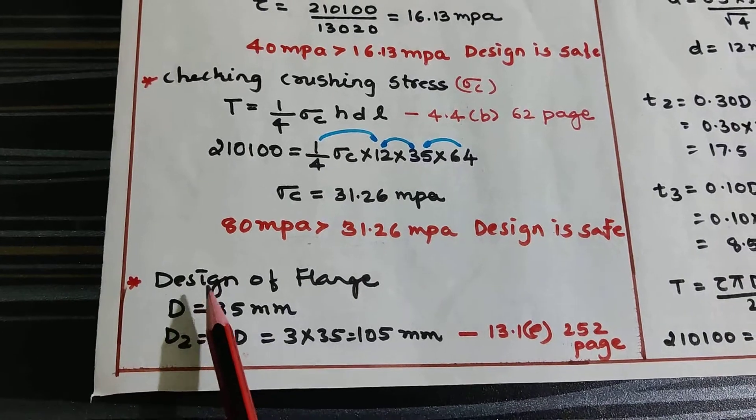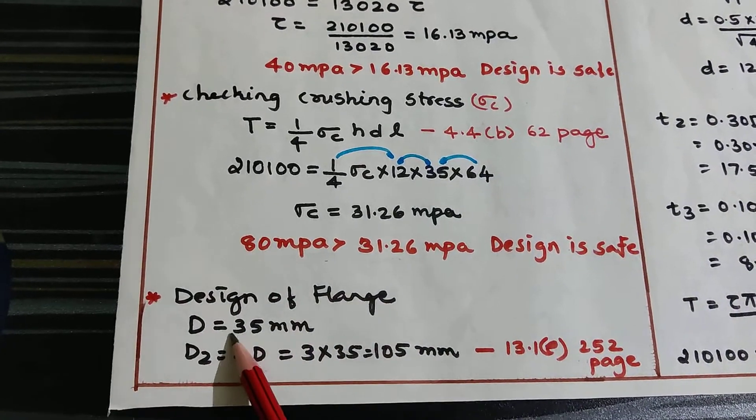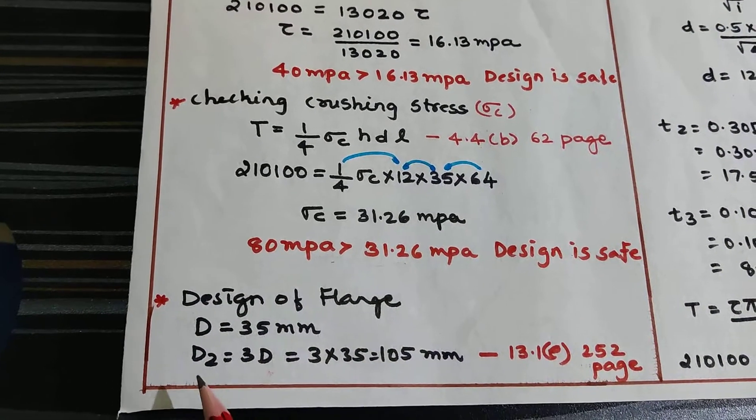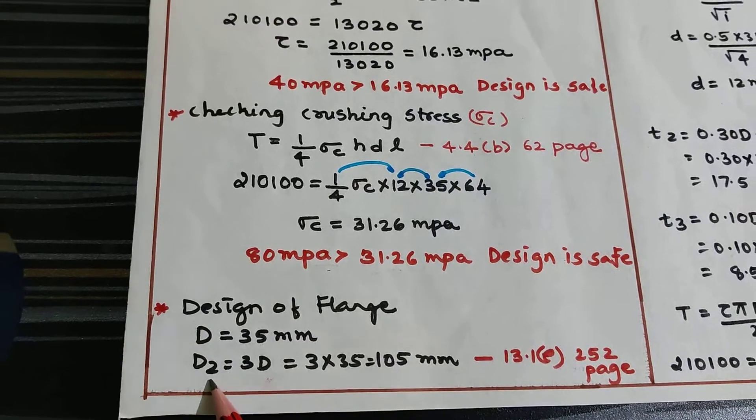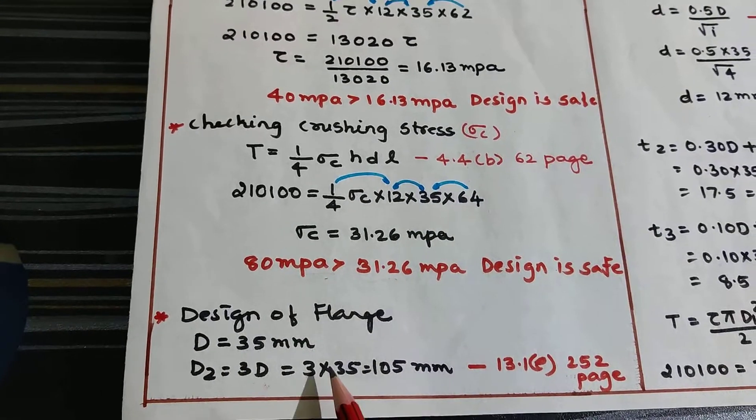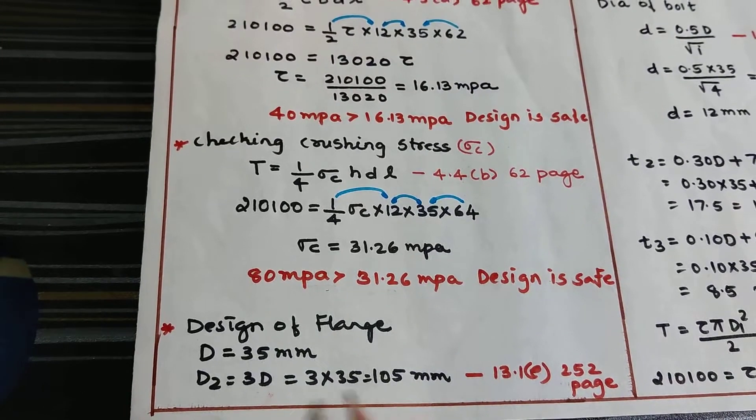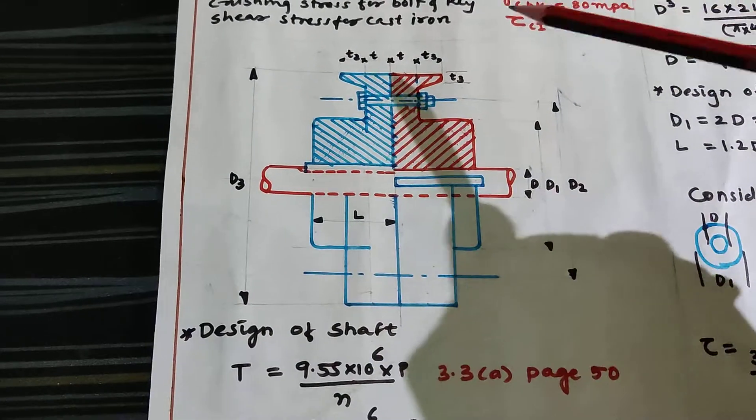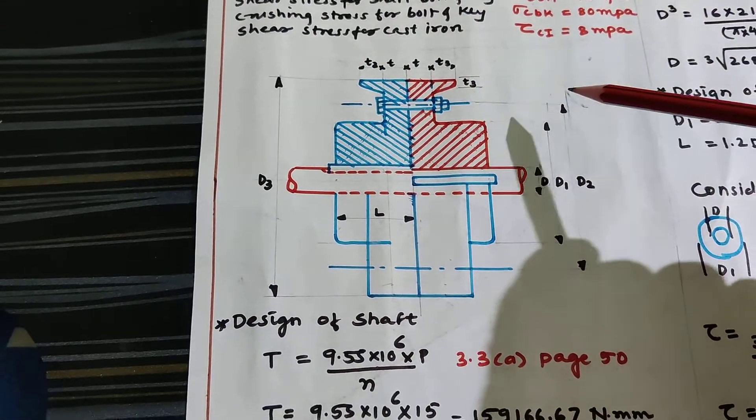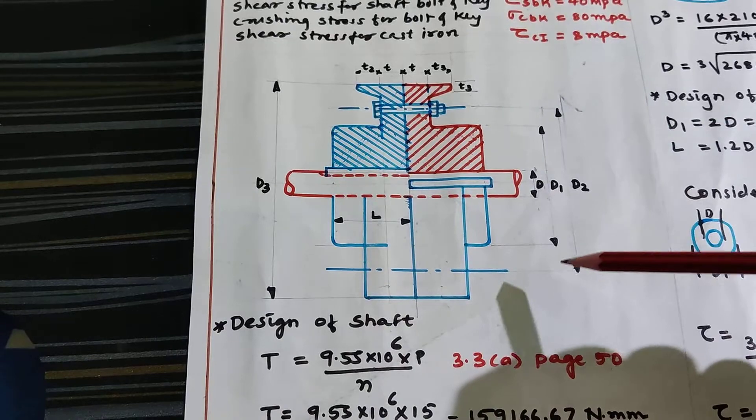Now let's move to the design of flange. Diameter is 35 mm. We have to find D2. D2 = 3D from page 252 equation 13.1A: 3 × 35 = 105. D2 is the pitch circle diameter from here to here.